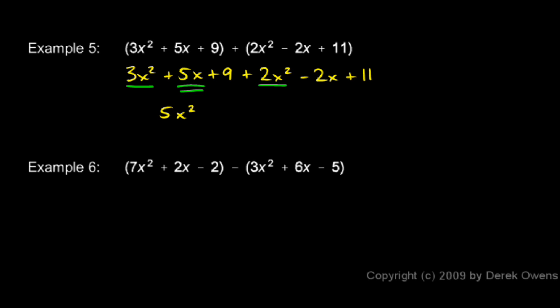Here we have 5x, and here's another x term, the -2x. 5x and -2x combine to give us a positive 3x.